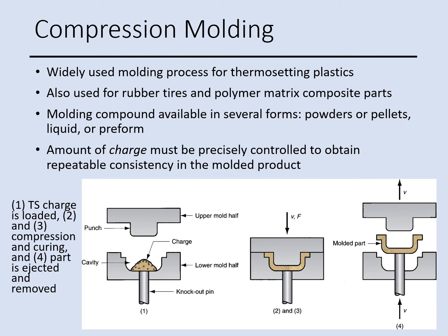Now we go over several molding processes for plastic material. The first is called compression molding, a very common type designed for thermoset plastics. With this process we can make rubber tires and polymer matrix composite parts. The raw material can be in the form of powder, pellets, liquid, or pre-form. In the process, a charge is placed in the mold, which is heated up while pressure is applied.